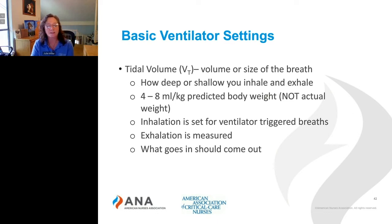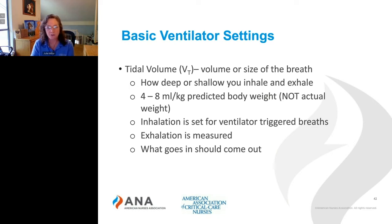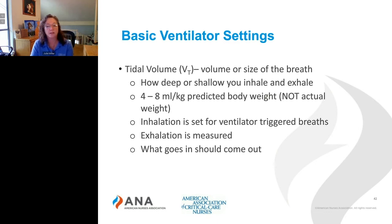The amount that goes in is set — that's the inspired tidal volume or the inhalation, and that's the setting on the ventilator. It's usually four to eight milliliters per kilo of predicted body weight. Predicted body weight is the weight you should weigh based on your height. Lungs don't change size just because you gain or lose weight, so providers order ventilator settings based on predicted body weight so we don't damage the lung with too much volume. Typically it starts at six milliliters per kilo tidal volume and varies based on arterial blood gases, with inhalation usually around 400s.